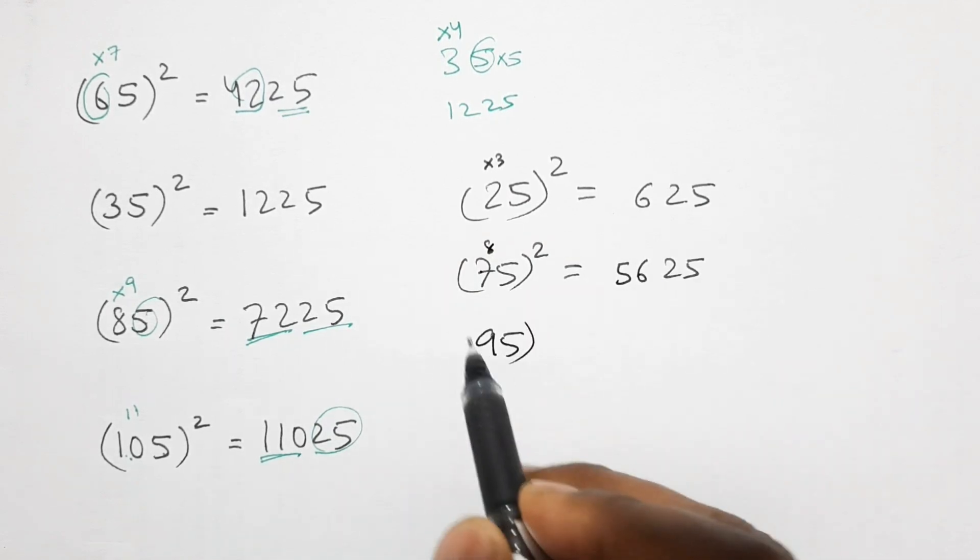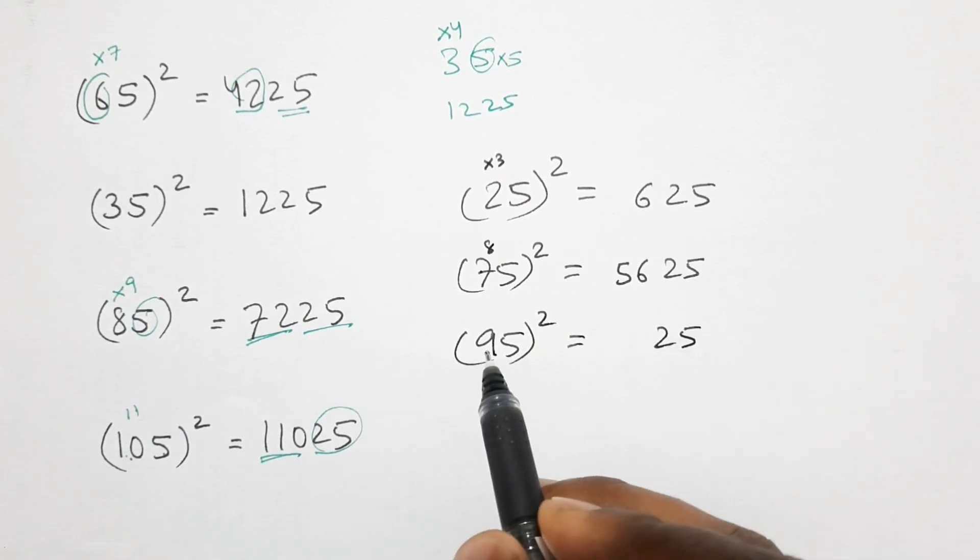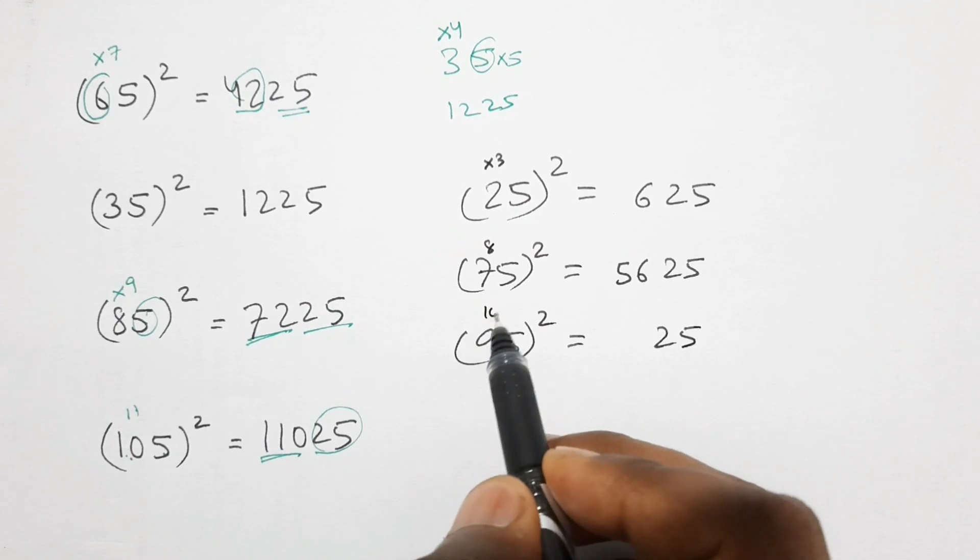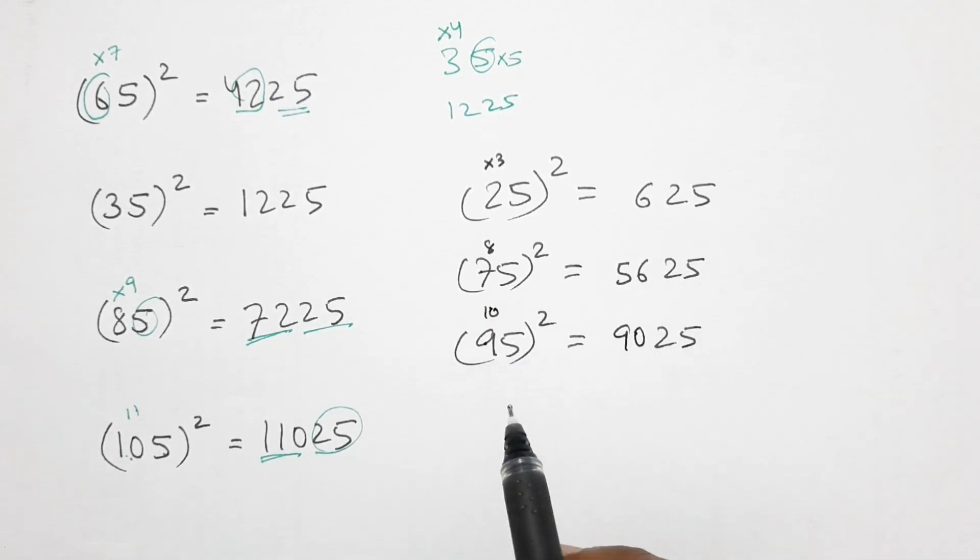Similarly 95 square, so first 5 square is 25 and 1 more than 9 is 10, so 9 times 10 equals 90. Similarly, let's take one more example, that is 55 square.